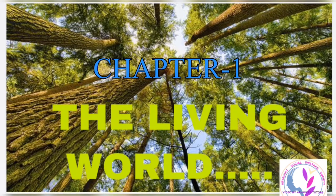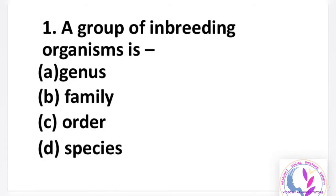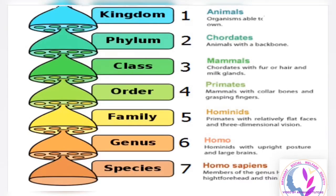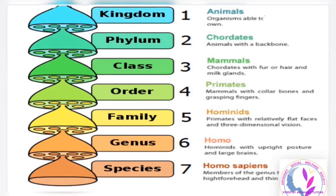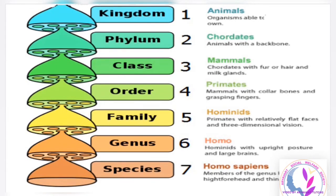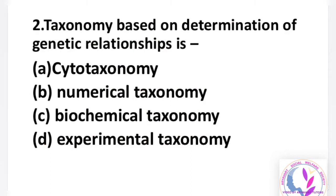The first MCQ today is: inbreeding organisms belong to which level? Option A: genus, B: family, C: order, D: species. The answer is D, species. According to the hierarchy in ascending order, species is the smallest unit of hierarchy, so at the species level we can see inbreeding organisms.